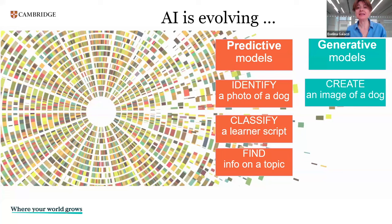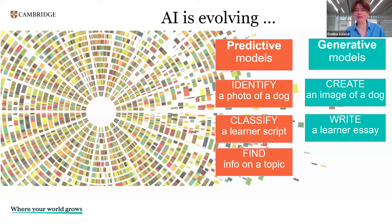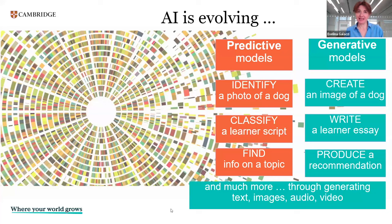The difference now is that the models are generating information. So instead of identifying a photo of a dog, these models can actually create an image of a dog. Instead of classifying a learner script, they can actually write a learner essay. And instead of just finding information on a topic and giving you website links, they can actually write a recommendation for you. These models can do much more through generating text, images, audio, and video.